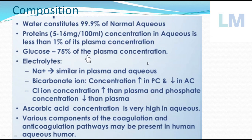Electrolytes: sodium level is 145 milliequivalents, similar to plasma level. Bicarbonate concentration is increased in the posterior chamber but decreased in the anterior chamber of the eyeball. The posterior chamber is behind the iris and in front of the lens; the anterior chamber is in front of the iris but behind the cornea. Chloride ion concentration is more than that of plasma, while phosphate concentration is less than that of plasma.